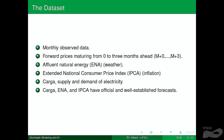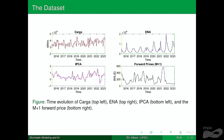This is about the dataset. We have three co-variables and prices. Some co-variables present a clear seasonal pattern, and we want to map these three co-variables to prices. INA is about the level of reservoirs, because Brazil has a large hydroelectric generation capacity. Carga is related to power demand. And IPCA is about the economy — it's about inflation. We want to map all three co-variables to prices.